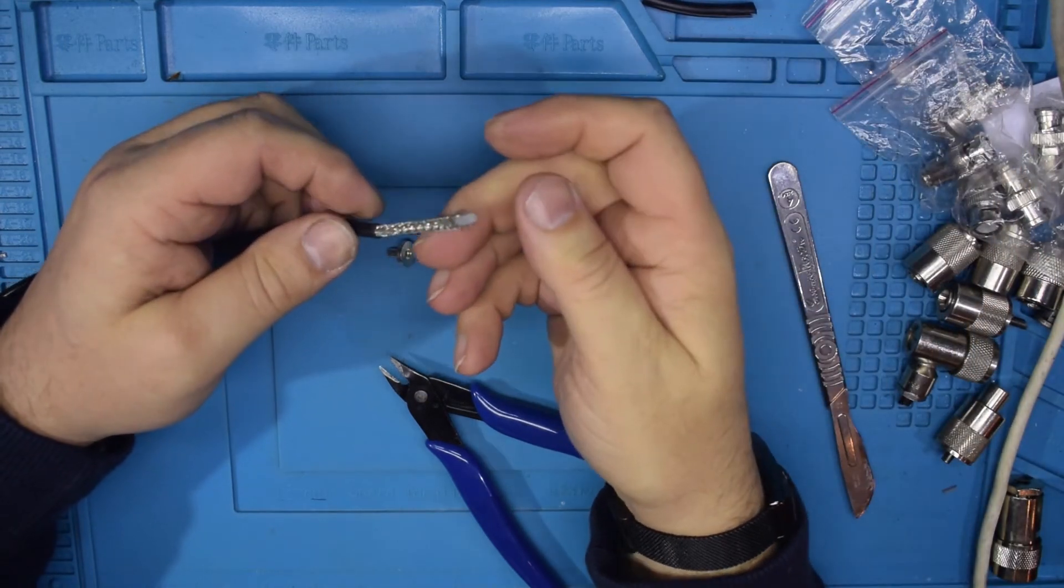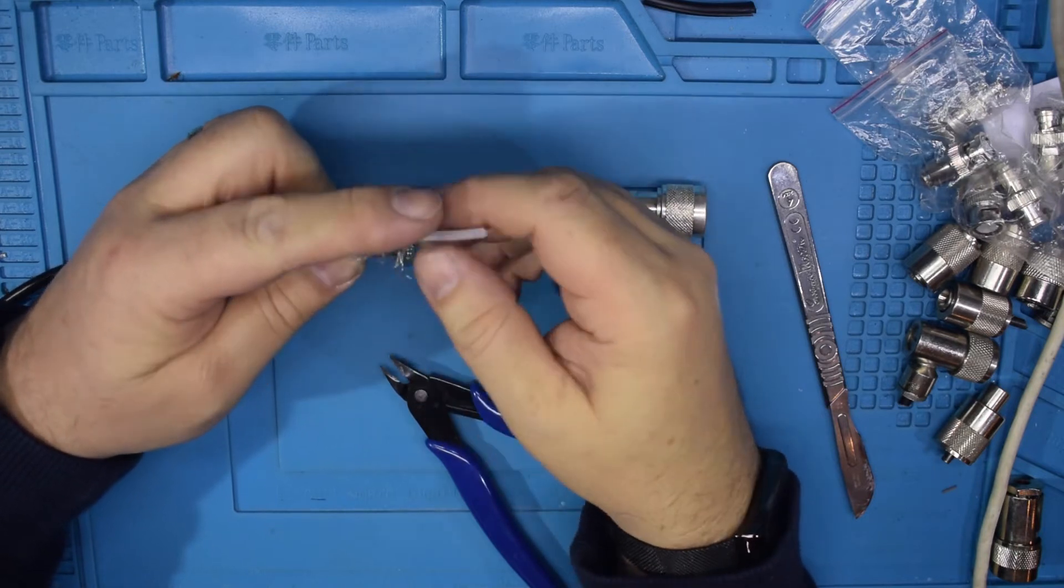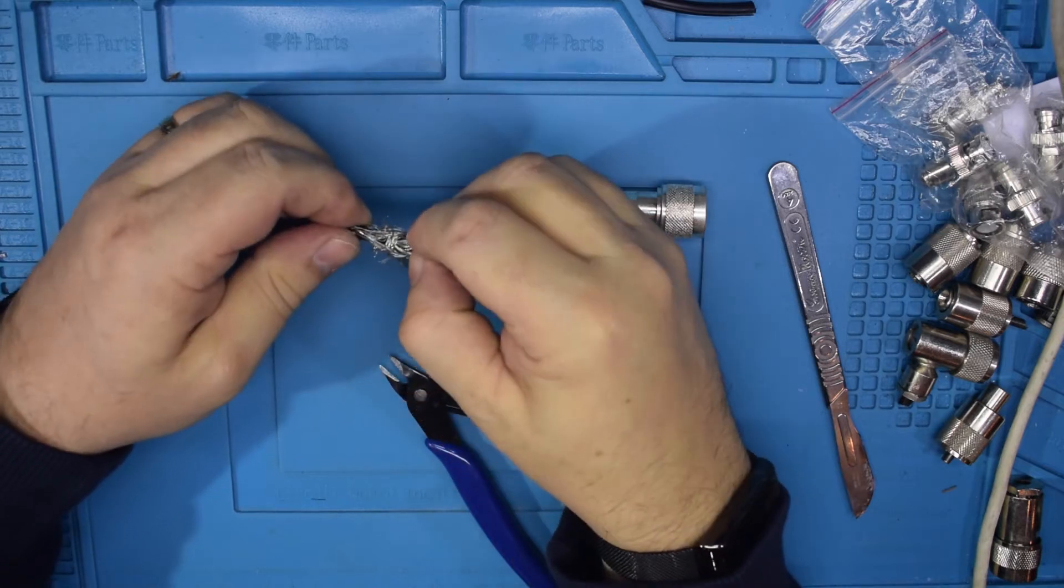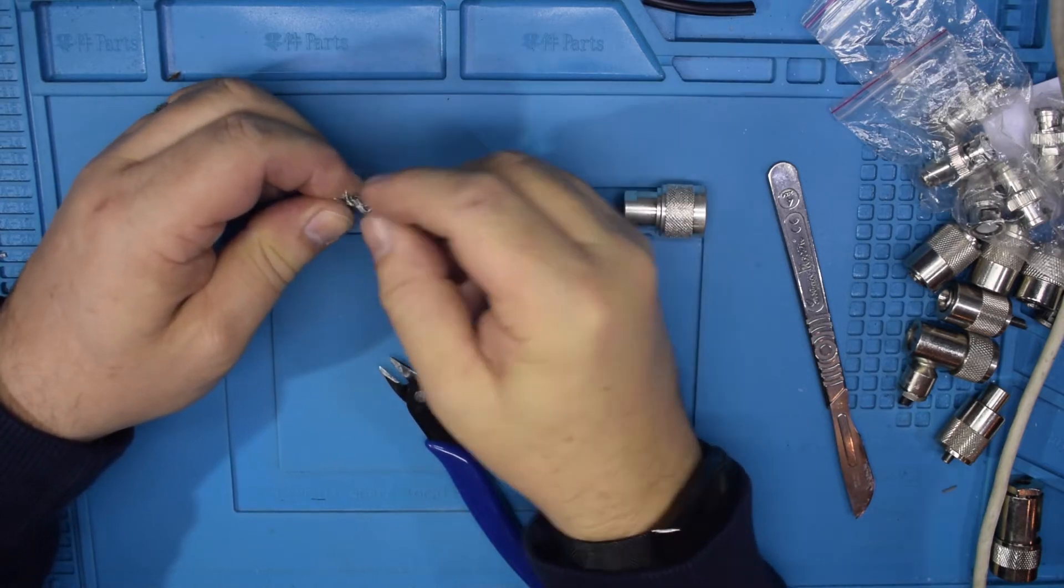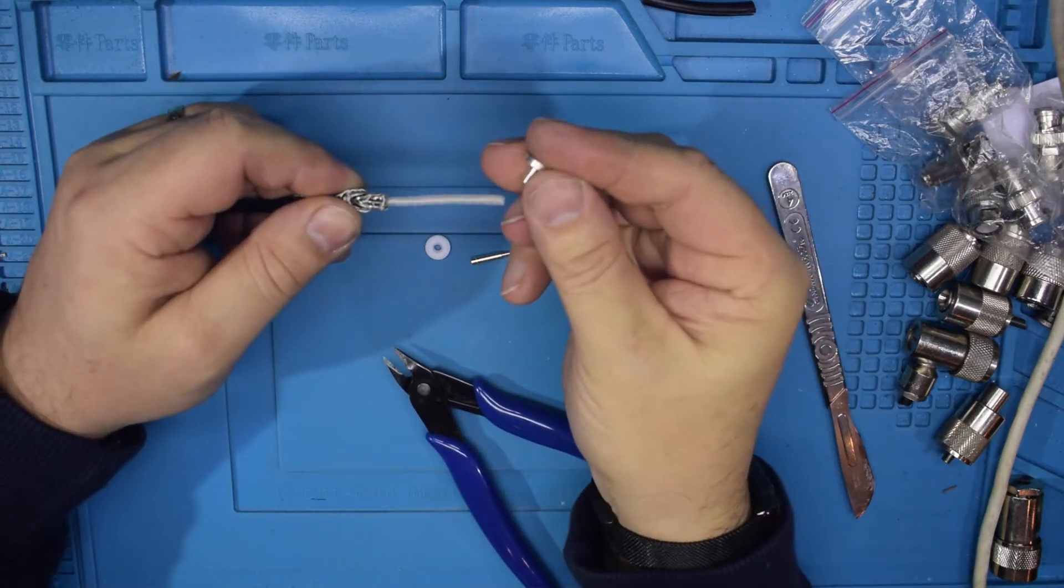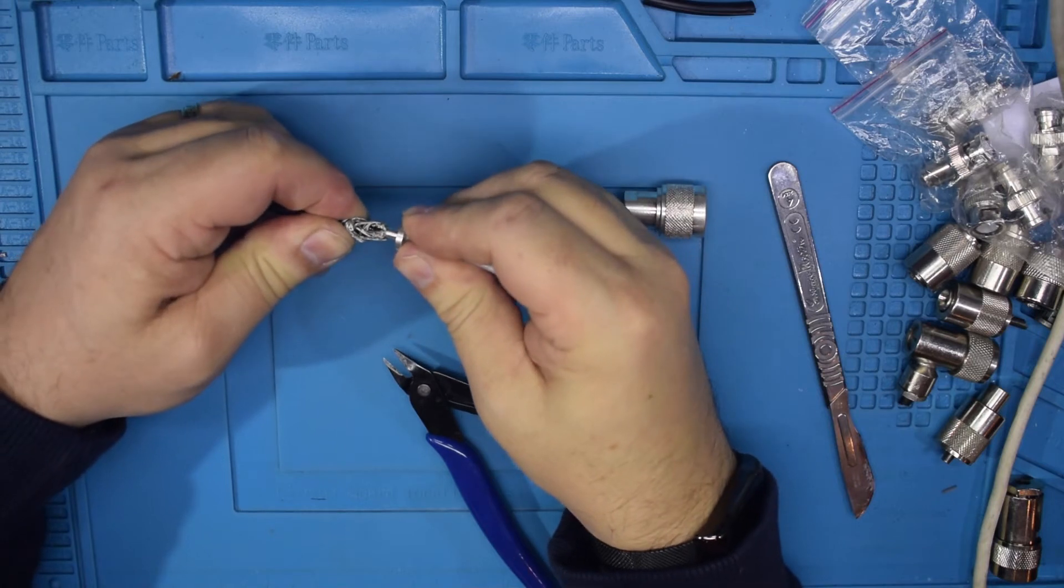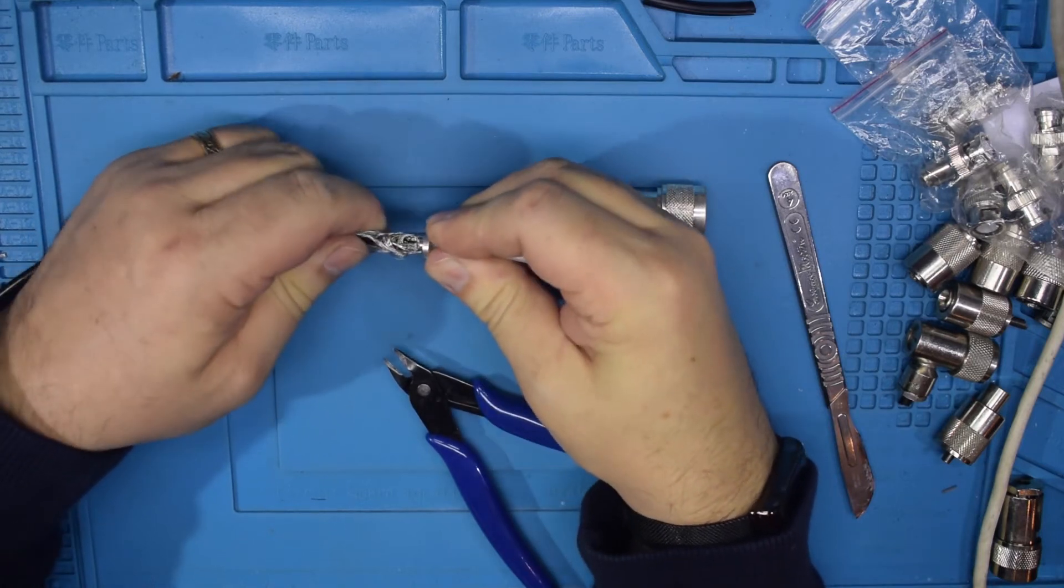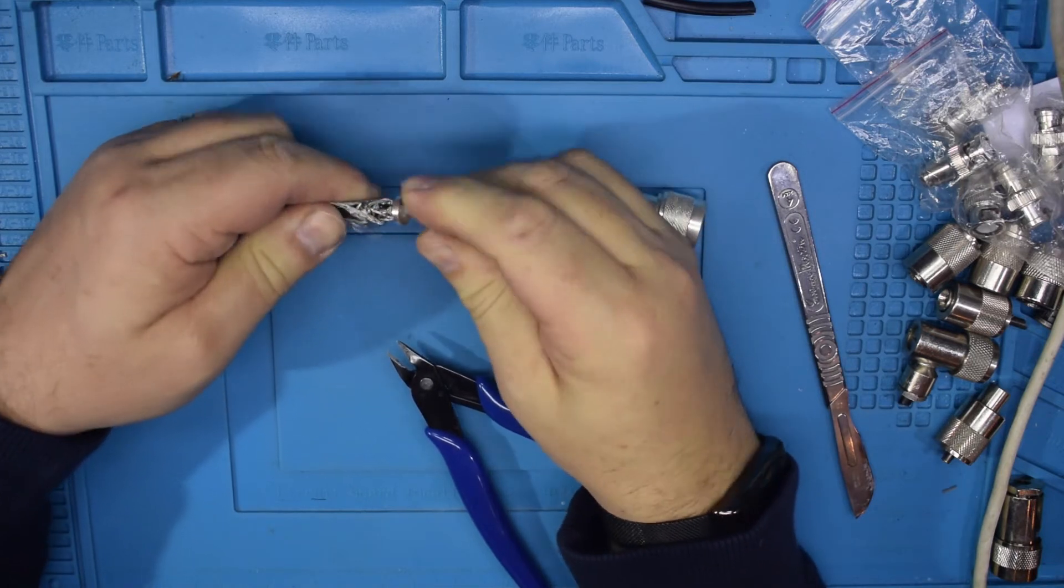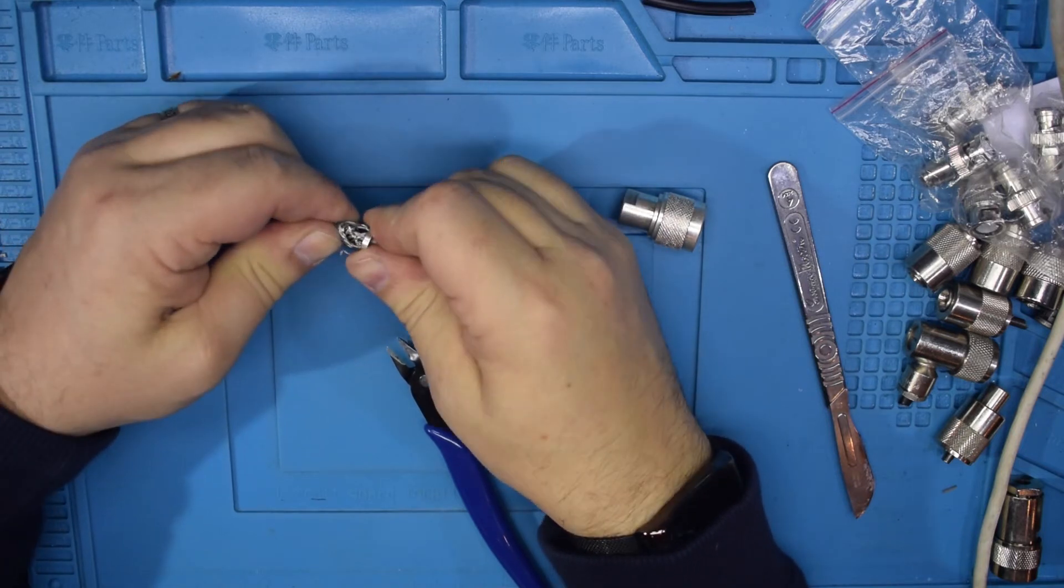Then what you do is you take your braid and you feed it back over itself like that. And then you take your cable attachment like this, your cable inner, and you slide it in and you push it all the way in until it meets up with the braid and the outer that you've cut.